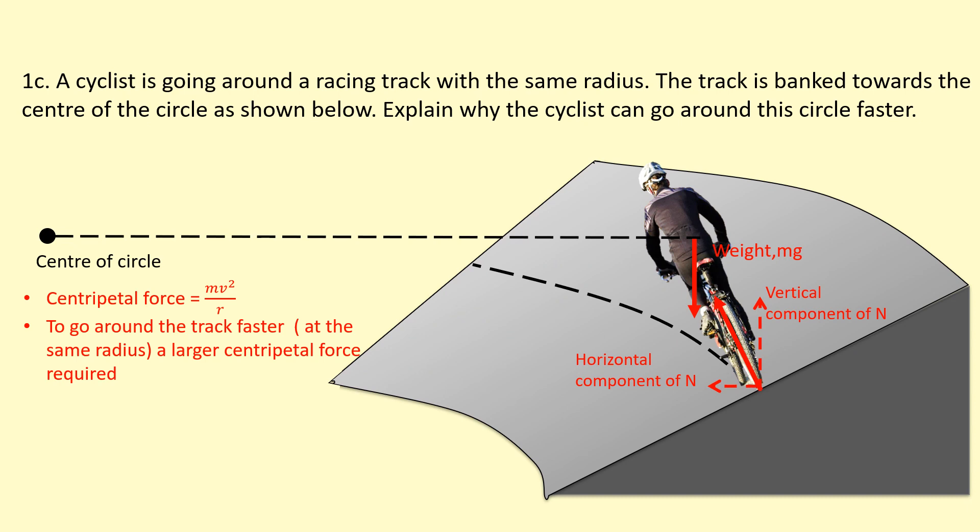Because the banked surface is banked, and the horizontal component of normal reaction force can provide a larger centripetal force, we can go around the circle with the same radius and same mass, but faster.